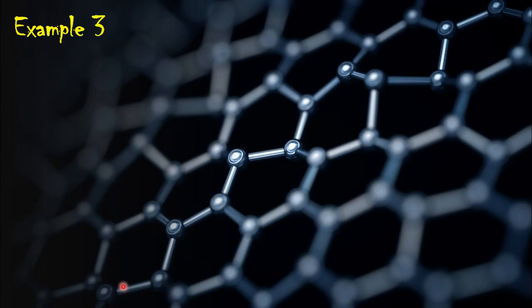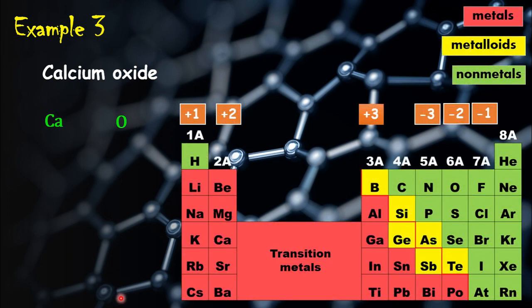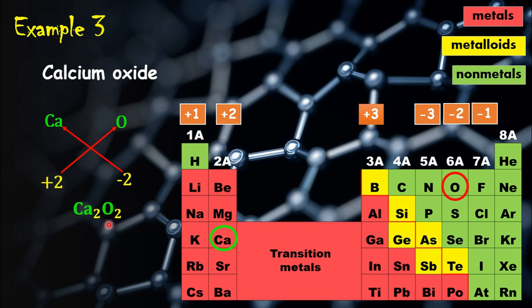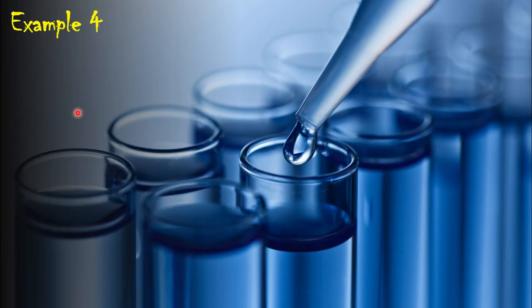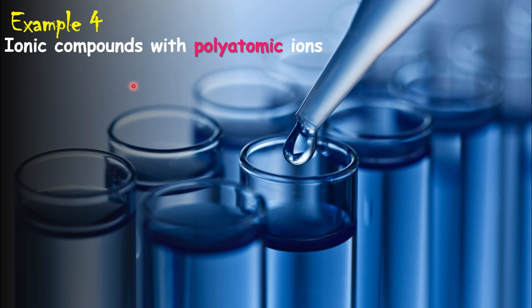Now let's work out the chemical formula of calcium oxide. The positive ion is calcium and the negative ion is oxygen. Calcium is in group two and has a plus two charge; oxygen has a minus two charge. Using the crisscross method it would be Ca₂O₂, but the final formula must be simplified to the lowest possible ratio, so we write it as CaO. That is the formula for calcium oxide.